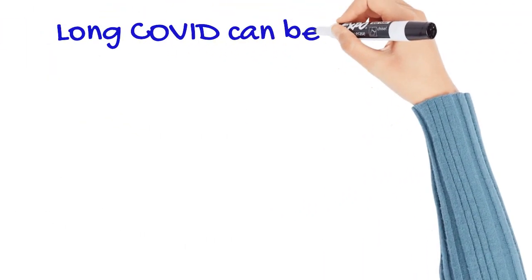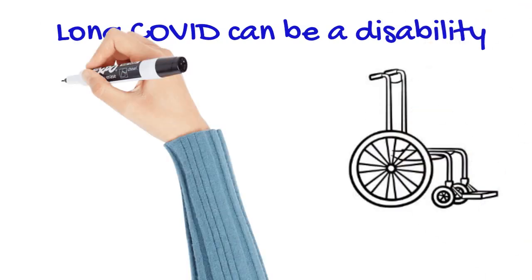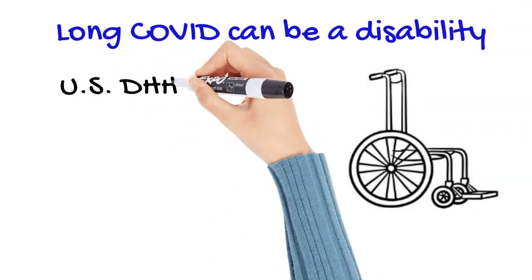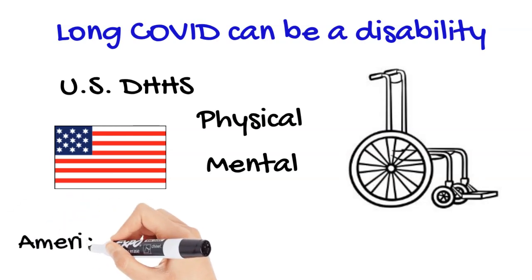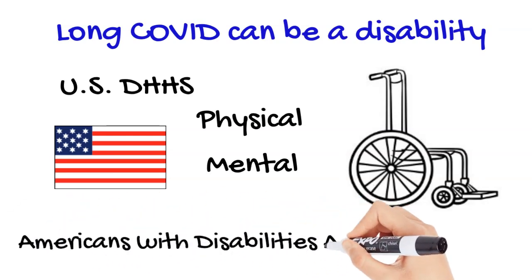It is important to know that long COVID can be a disability. According to the U.S. Department of Health and Human Services, long COVID can be a disability if it substantially limits one or more major life activities. This is because some people with long COVID experience physical or mental impairment such as damage to the lungs, heart, kidney, or the nervous or circulatory systems. Some also experience lingering mental health conditions. This means that some people with long COVID are entitled to the same rights as other people with disabilities under the Americans with Disabilities Act.